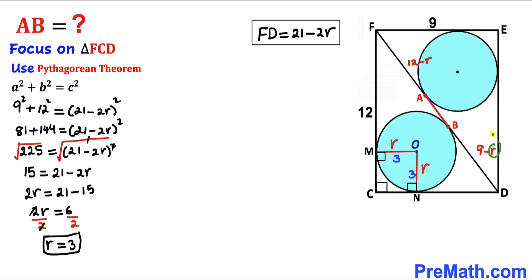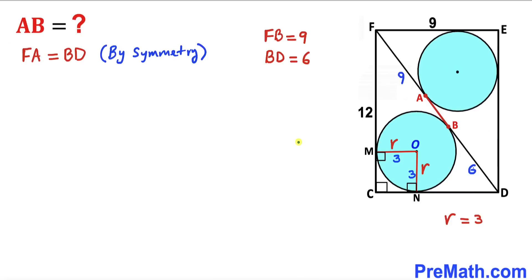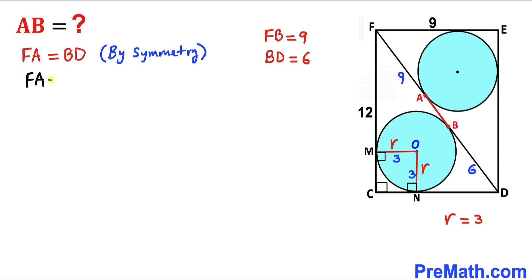Substituting r equals 3: FB becomes 12 minus 3 equals 9 units, and BD becomes 9 minus 3 equals 6 units. Since both circles are congruent and tangent to the same diagonal FD, by symmetry length FA is congruent to length BD. Therefore FA equals 6 units.